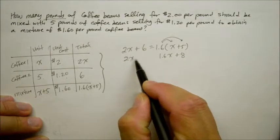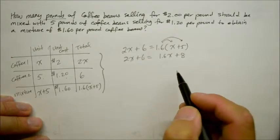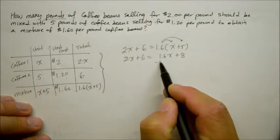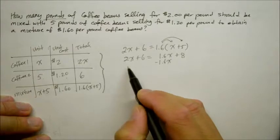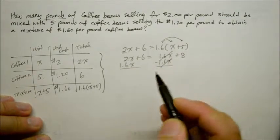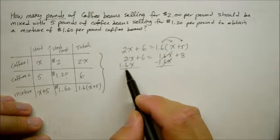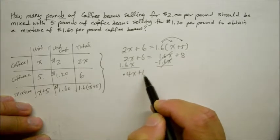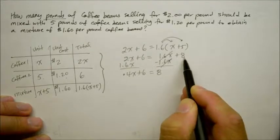And on the left side, it's still 2X plus 6. Now let's combine the X's together by bringing the 1.6 over to the left side because it's a smaller one. So as a result, 2X minus 1.6, that's 0.4X plus the 6 is equal to 8 on the right side, that remains.